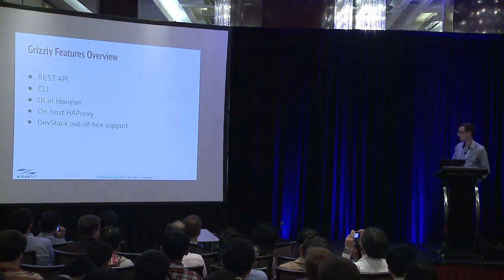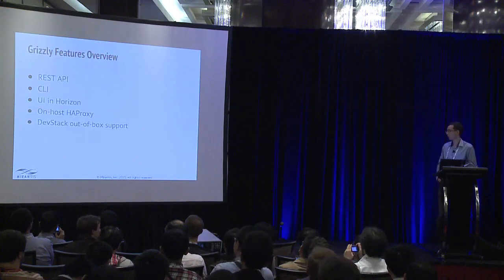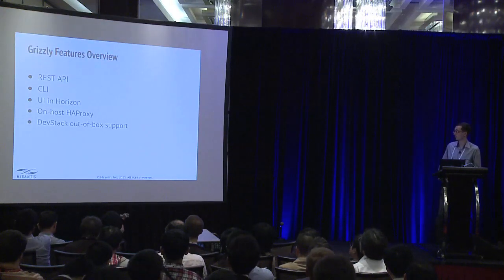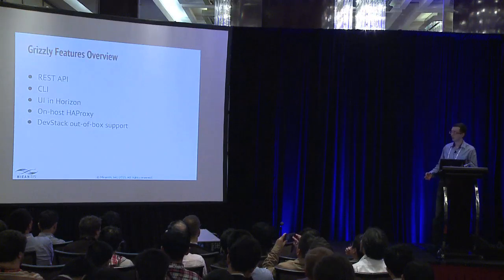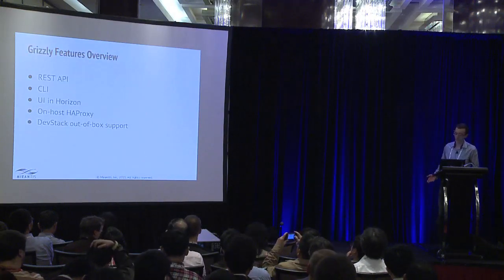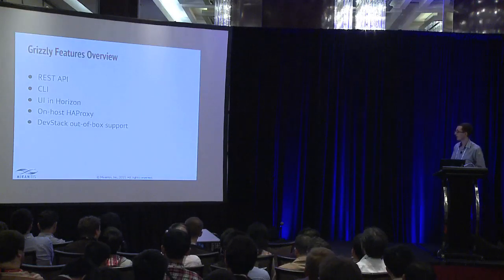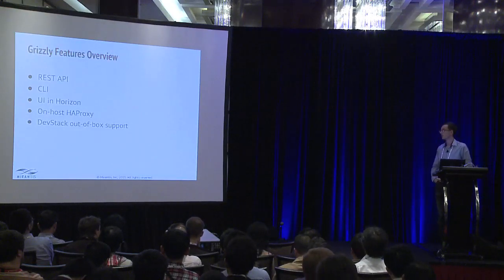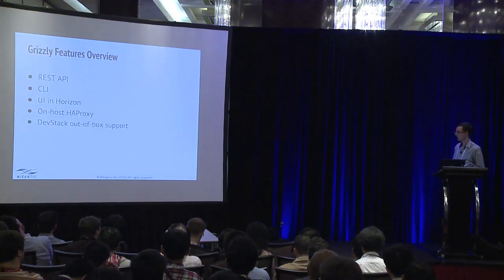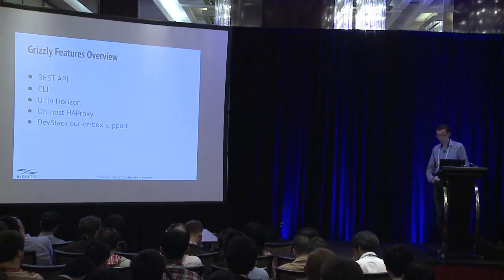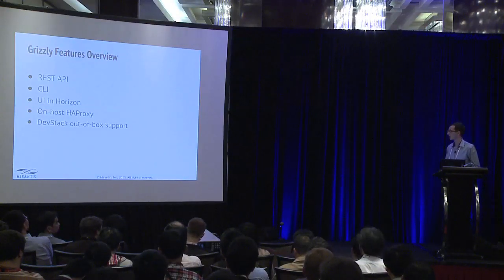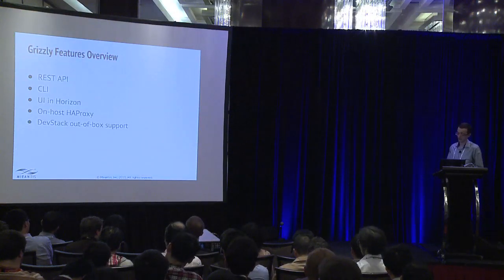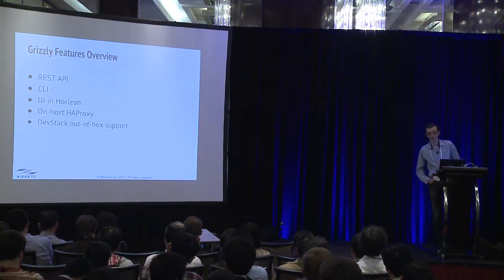I'd like to show the list of features that we had in Grizzly. We've got a couple of things to help users work with the whole project: REST API, ability to operate with it via CLI, and we had Horizon integration. As a back-end implementation, it was an HAProxy-based solution which spawns HAProxy software load balancers on the network controllers. We also had DevStack support out of the box, so you can install it in your single-node installation.